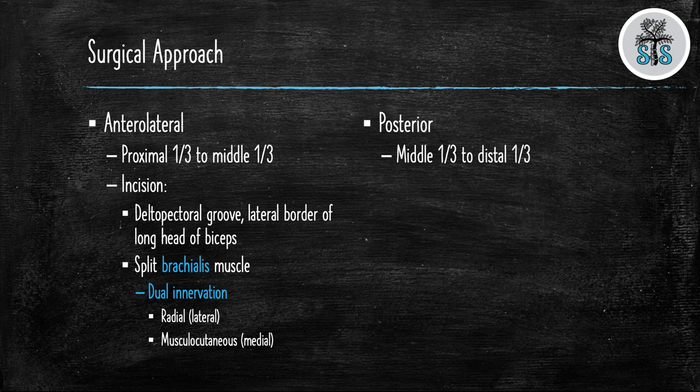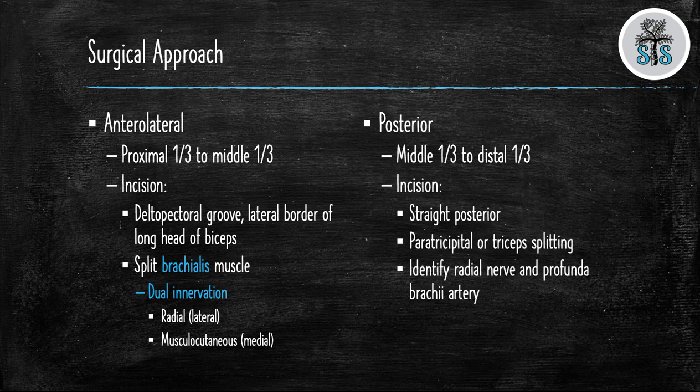We will now discuss the posterior approach. This approach will most commonly be used in the middle third to distal third humeral shaft fractures. The incision will be straight posterior and either split the triceps muscle or go around the triceps. You must identify the radial nerve during this approach and the profunda brachii artery. You must protect these vital structures throughout the case.